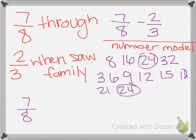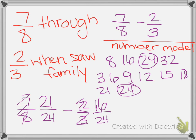So 7 eighths equals something twenty-fourths minus 2 thirds or something twenty-fourths. To get from 8 to 24, we multiply by 3. 7 times 3 is 21. To get from 3 to 24, we multiply by 8. 2 times 8 is 16. So now we have 21 twenty-fourths minus 16 twenty-fourths, which is 5 twenty-fourths.